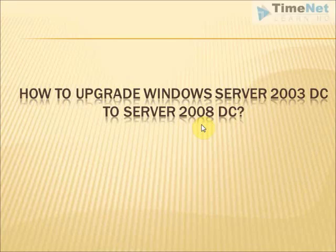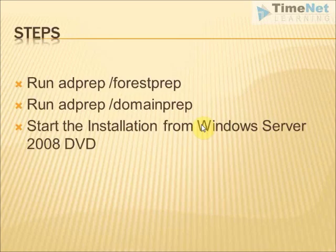How to upgrade Windows Server 2003 DC to Server 2008 DC. The upgrade of a Windows Server 2003 domain controller to a Windows Server 2008 domain controller is a very simple process. First we have to run the adprep utility for forest preparation and then domain preparation, and after that we can start the installation from a Windows Server 2008 DVD after logging on to the Windows Server 2003 operating system.